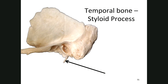Inferior to the external auditory meatus, there's a structure that looks almost like a pen — that's why we call it the styloid process. It is a site for muscular attachment.